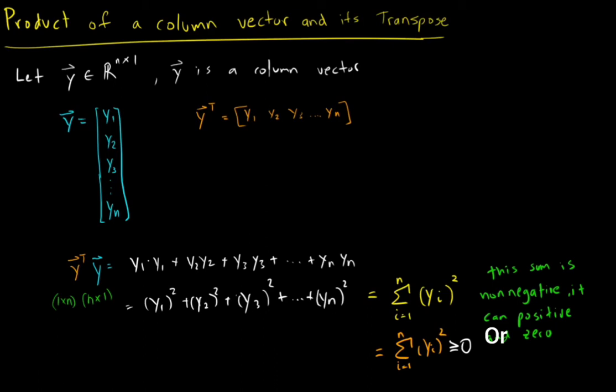That's true because every time we multiply one component from the transpose with the column, we're getting squares. These squares make anything positive. So we're adding a bunch of squared items, and the product of a transpose and its column vector will always give you a non-negative sum.